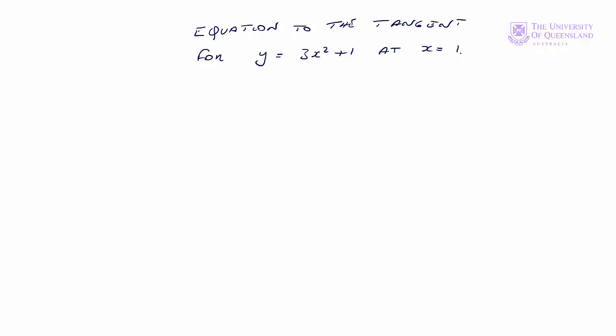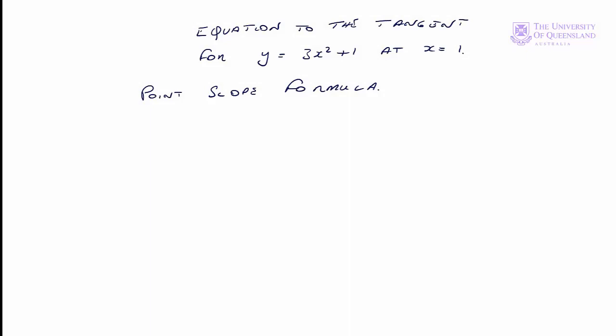We start with the point-slope formula. The form we have in this lecture is y minus f of a, so that's y minus y1, is equal to f prime of a (well, that's just the slope) times x minus a, for a equals 1.